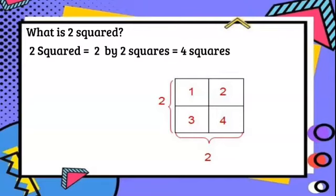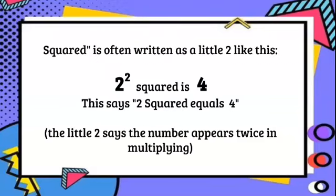So that's 2 by 2, which is going to equal 4. So here we have that 2 squared, 2 multiplied by 2 equals 4. Now squared is often written as a little 2 like this. That little 2 is found above on the right side of the number. So here we have a 2, and this means squared.